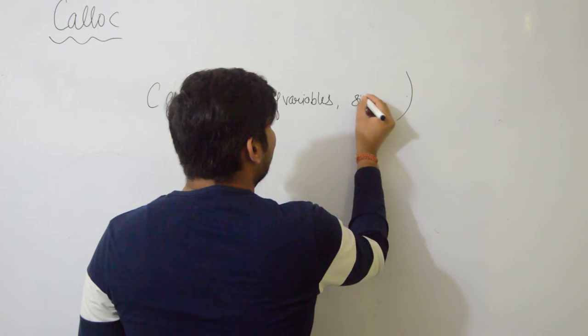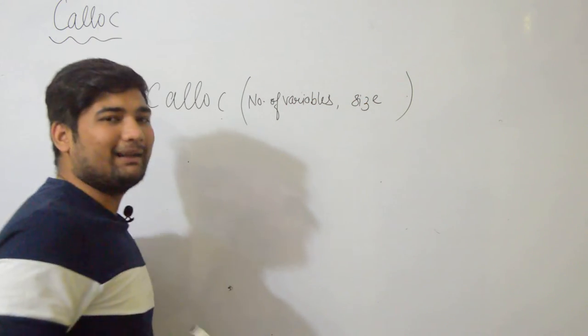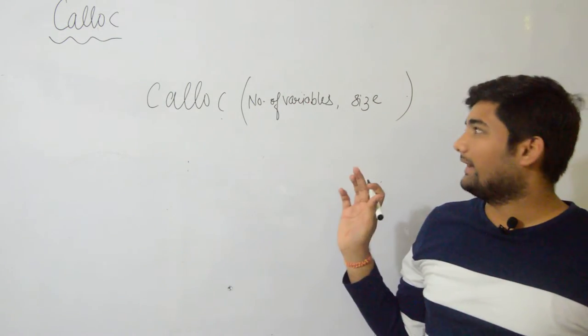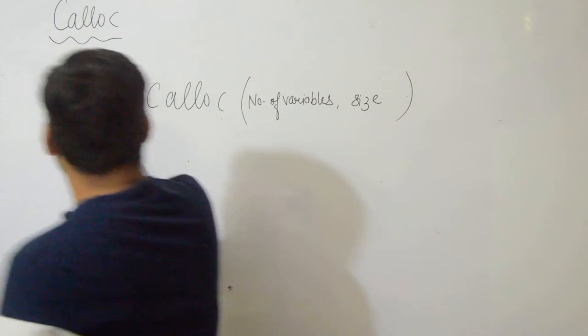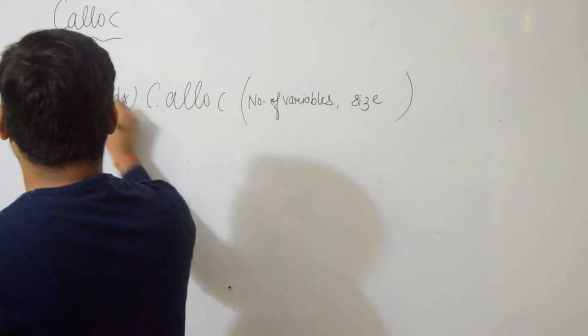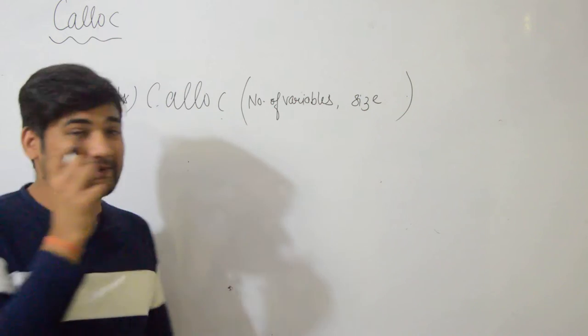The second is their size. Basically what you would write as multiply, you write it with a comma instead. Its return type is void pointer, same as malloc.